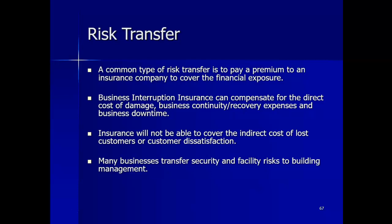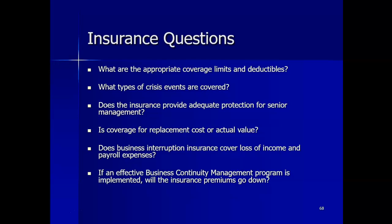The most common type of risk transfer is to pay a premium to an insurance company to cover financial exposure. Business interruption insurance can compensate for the direct cost of damage, business continuity or recovery expenses, and downtime. Although lost revenue can be covered, insurance will not be able to cover the indirect costs of losing a customer or customer dissatisfaction. Basic questions to address with an insurance professional include: what are the appropriate coverage limits and deductibles; what types of crisis events are covered; does the insurance provide adequate protection for senior management; is coverage for replacement costs or actual value; does business interruption insurance cover loss of income and payroll expenses; and if an effective BCM program is implemented, will the insurance premiums go down?